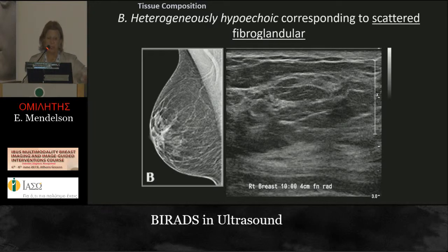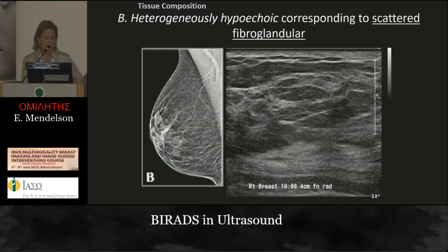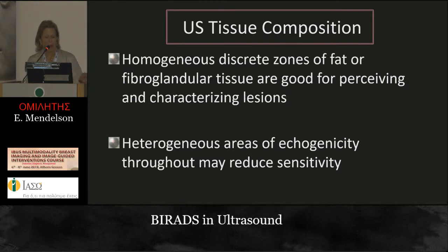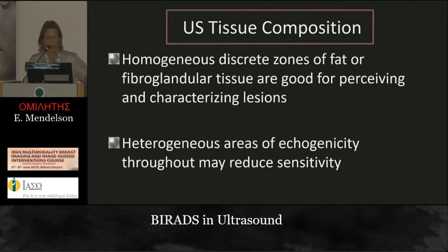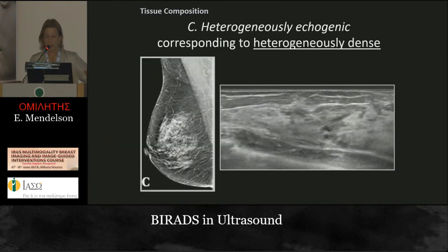Category B is scattered fibroglandular tissue — the terminology there — with more fibroglandular tissue, still quite a fatty breast. The ultrasound picture is heterogeneous, with an admixture of fat interspersed with fibroglandular elements. If you have a homogeneous discrete zone of fat or glandular tissue, it's easy to pick up and characterize a lesion within it. For ultrasound, the heterogeneity of category B can reduce sensitivity, making it hard to separate pathology from normal. That's where real-time imaging comes in.